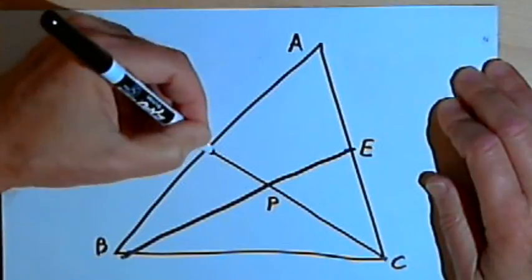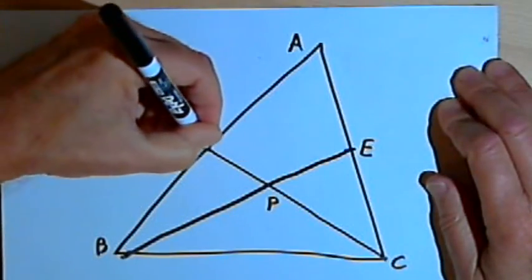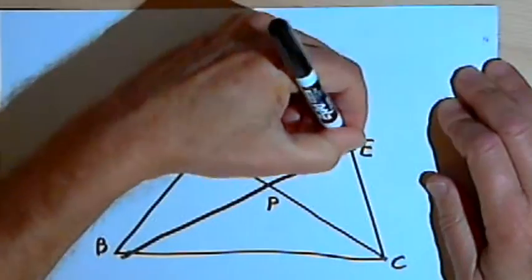And now I'm going to connect points D and E. Now remember, D and E are midpoints. So if I connect two midpoints, I form a mid-segment.